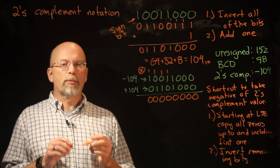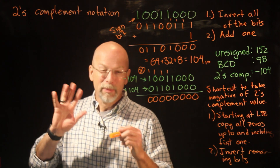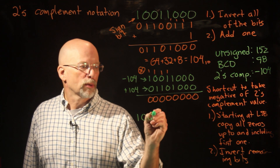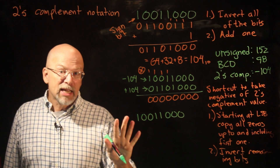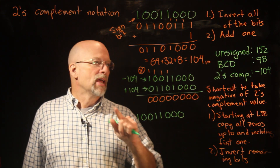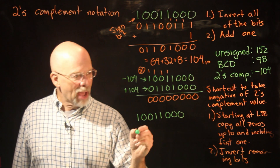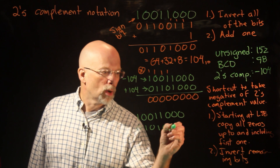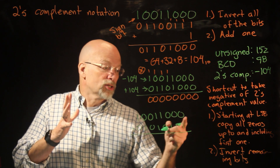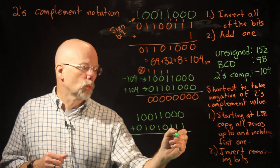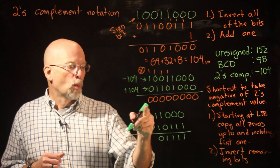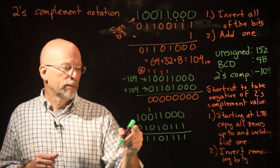Let's do a little math. Take our pattern 10011000. Remember, if it's unsigned binary we're looking at 152; if it's two's complement we're looking at negative 104. Let's add it to 01010111. Zero plus one is one; zero plus one is one; zero plus one is one; one plus zero is one; one plus one is zero, carry the one; one plus zero plus zero is one; zero plus one is one; one plus zero is one.